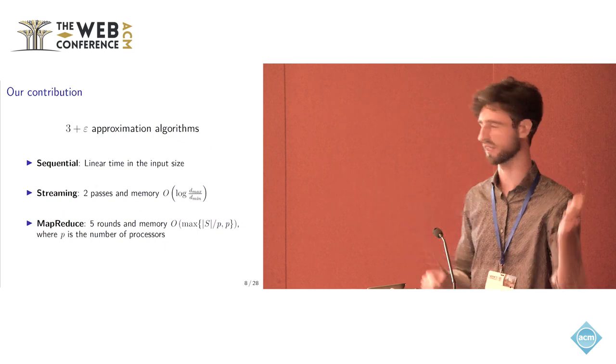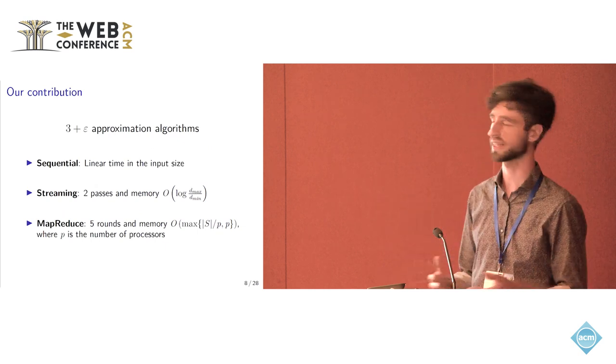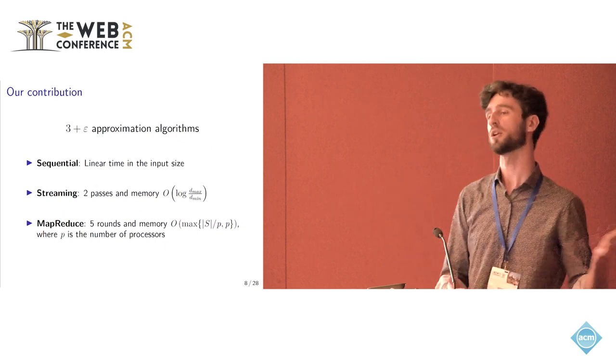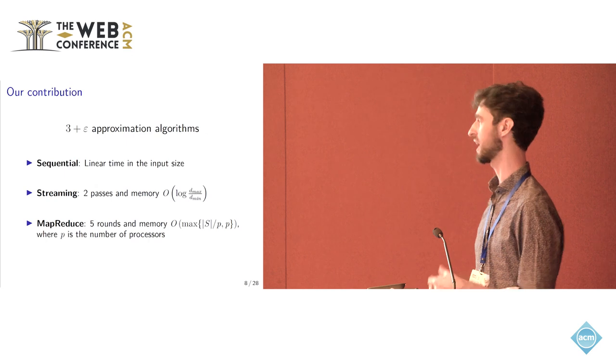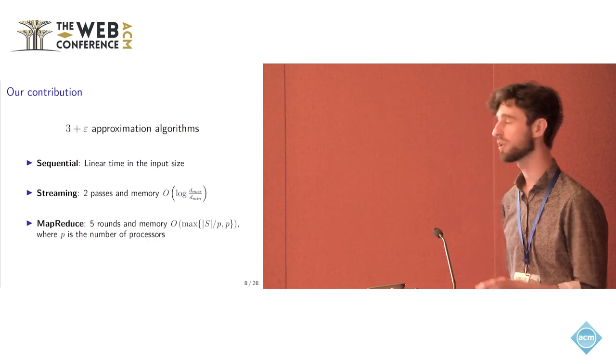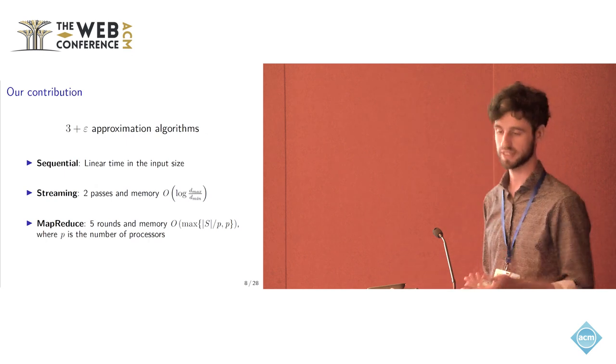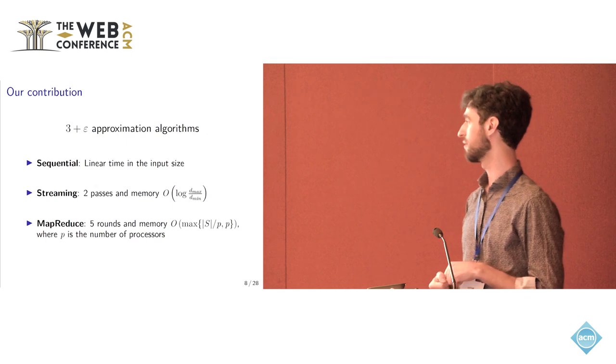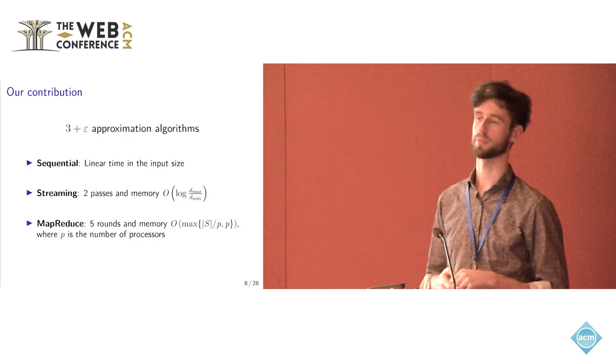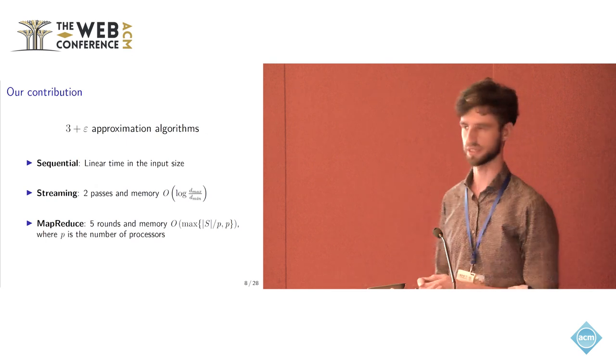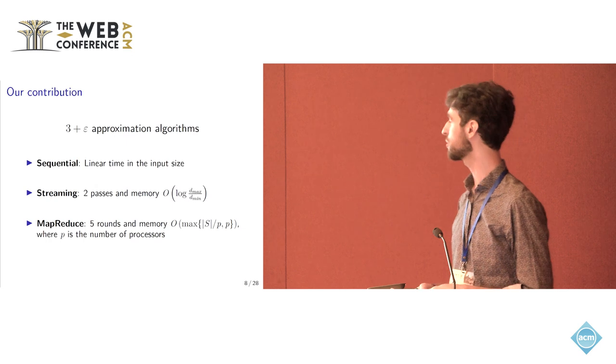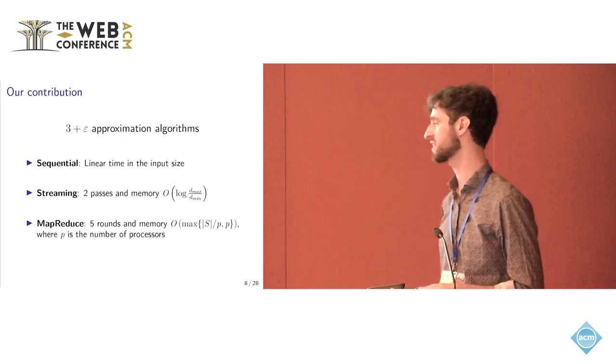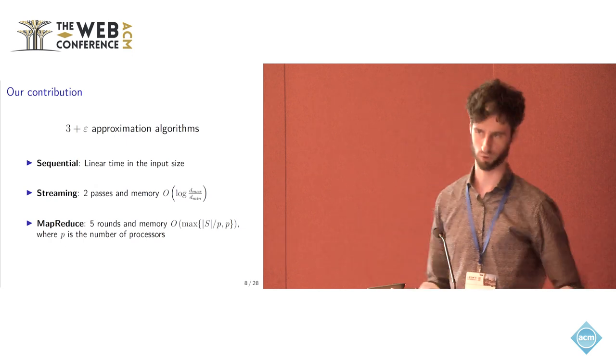I'm sparing you all the details and the dependencies of the complexities, but the idea is that in the sequential setting you are linear in the input size for the time. In Streaming you can do only two passes on the data and the memory you use depends on the aspect ratio of the data set itself. And in MapReduce you have a memory that basically scales nicely with the number of processors that you have.